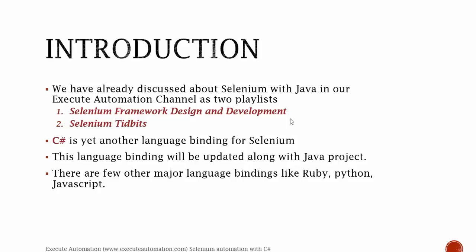C Sharp is yet another language binding for Selenium — that's it. It's not a completely different alien thing altogether; it is just another language binding. This language binding is updated along with the Java project. There are a few other major language bindings like Ruby, Python, and JavaScript for Node.js, and all of those are updated alongside the Java project.